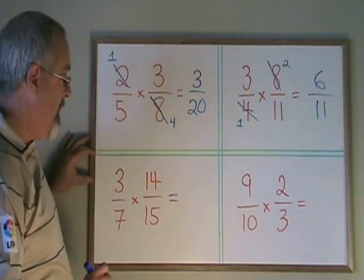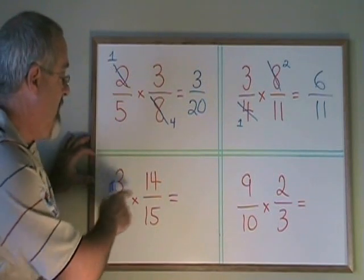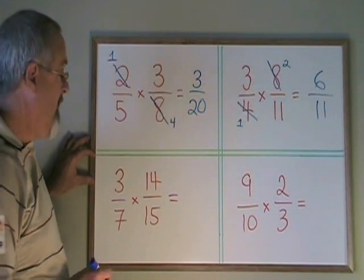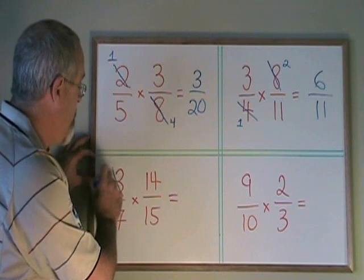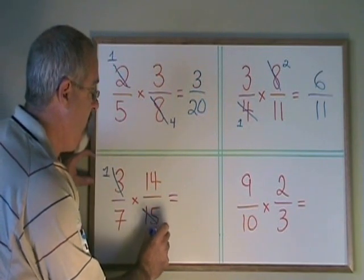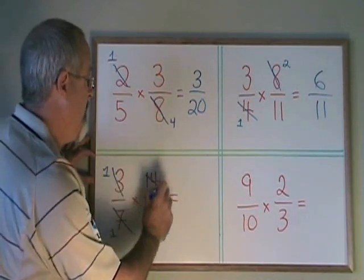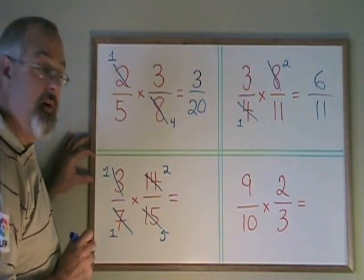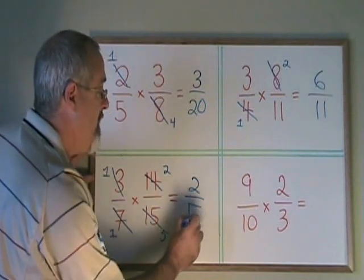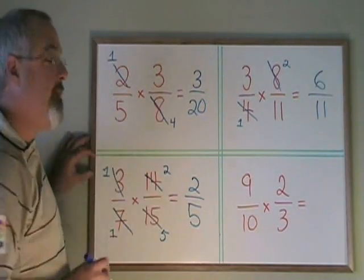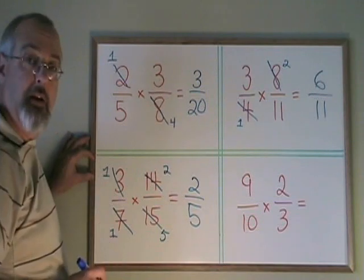Here's one that's a little more complicated, because the 3 and the 15 have a common factor of 3, while the 14 and the 7 have a common factor of 7. Canceling the 3s first: 3 divided by 3 is 1, and 15 divided by 3 is 5. Then 7 divided by 7 is 1, and 14 divided by 7 is 2. I end up with 1 times 2 on the top and 1 times 5 on the bottom. My final answer is 2/5, which cannot be reduced further. This shows that sometimes you have two canceling opportunities in the same multiplication of fractions.